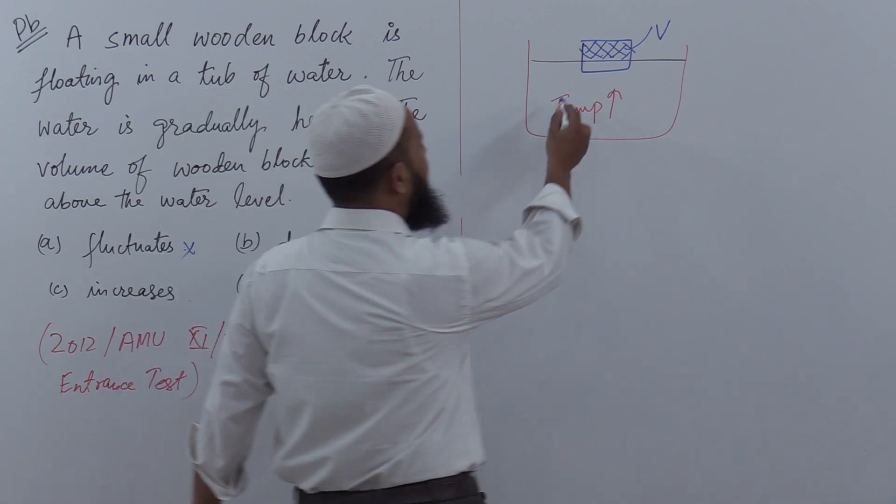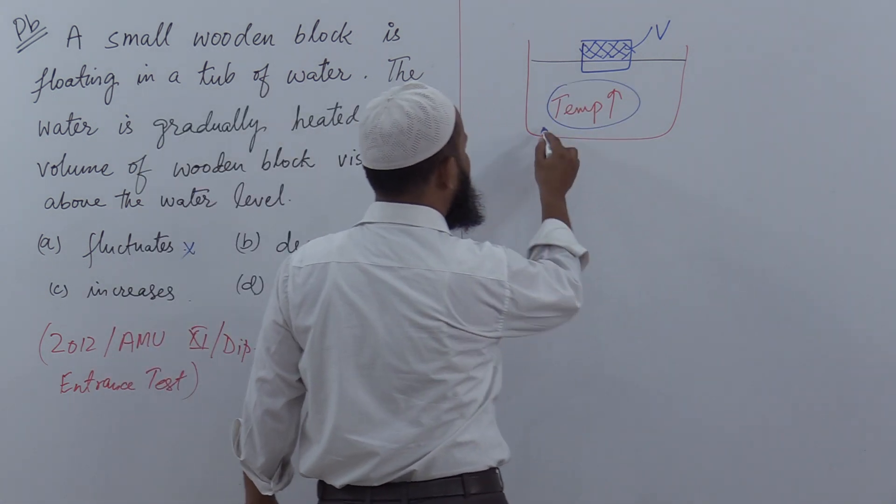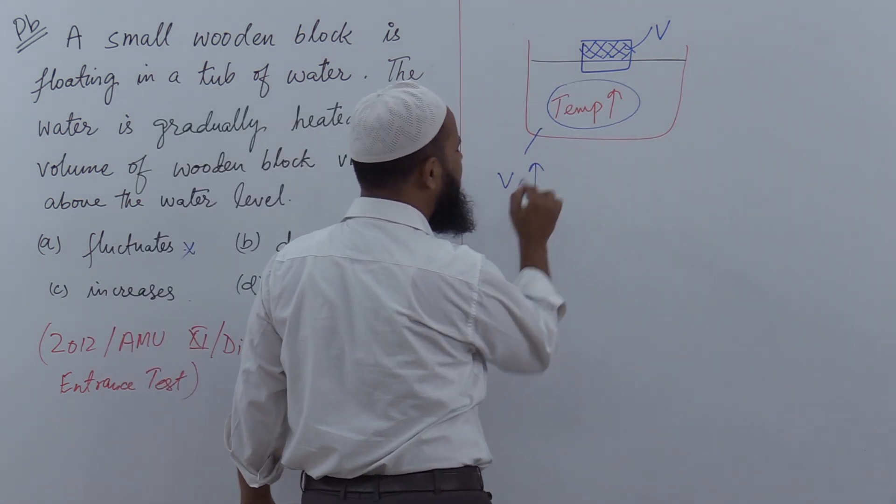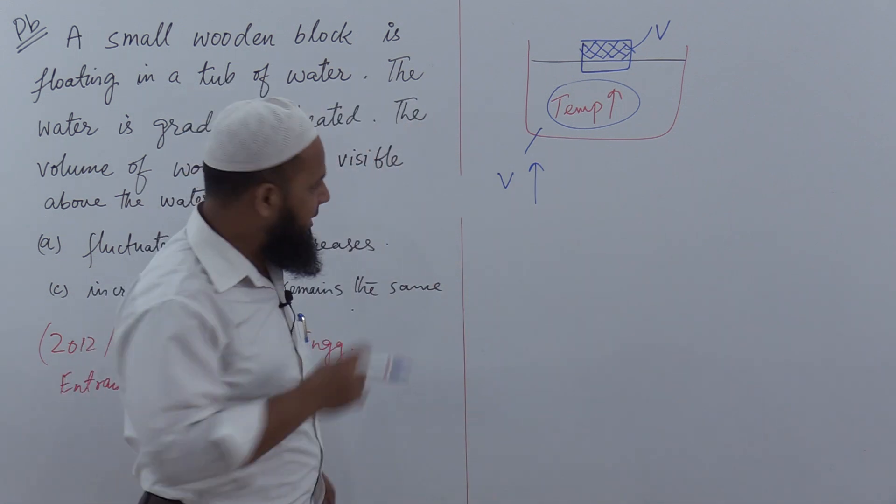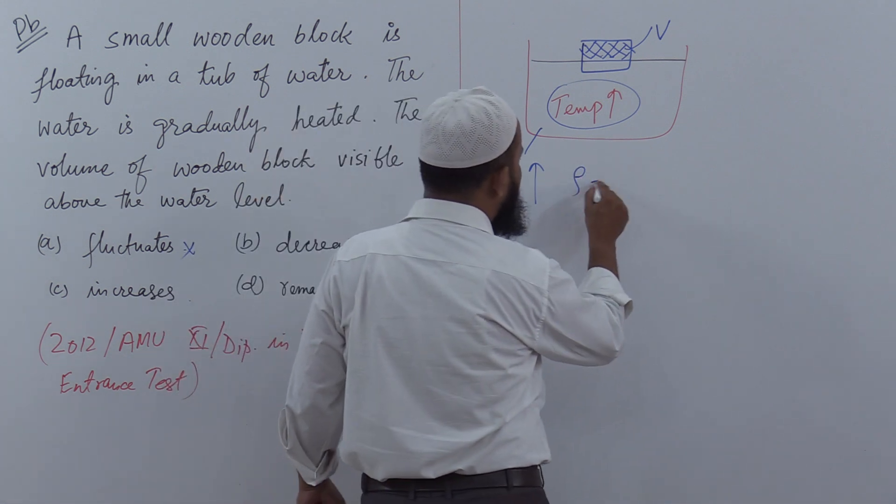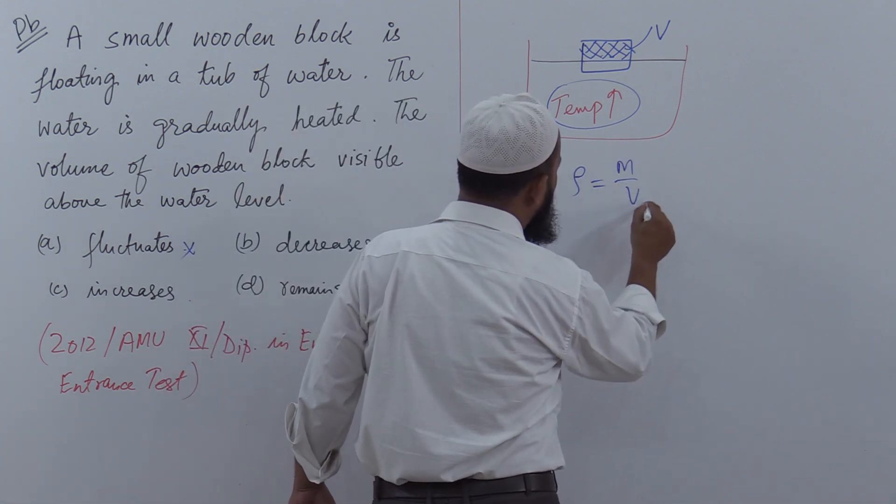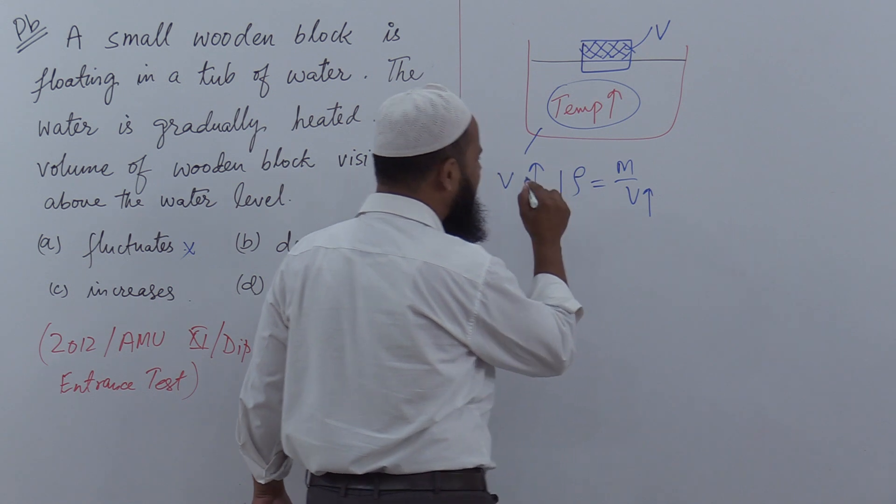Now understand that when the temperature increases, water volume will increase. Volume increases but mass remains the same. Density is mass upon volume, so when volume increases, it means density will decrease.